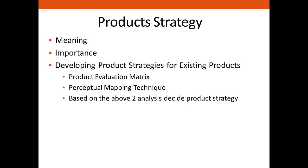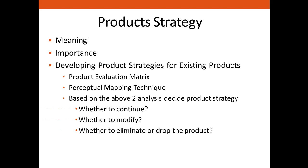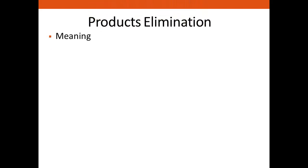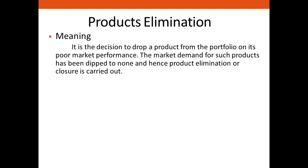Product elimination refers to the conditions under which a product is dropped. If a product does not meet the company's goals, they will eliminate or drop it. When a company decides to eliminate a product or product line, certain factors need to be considered. Product elimination is a decision to drop a product from the portfolio based on poor market performance — when market demand has dipped to nothing, product elimination is carried out.